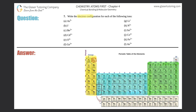Number seven: write the electron configuration for each of the following ions, a through l. This one is going to be crazy. Instead of watching a long video, they don't tell me to write the full electron configuration, so I'm going to be doing the shorthand. You guys should know how to do electron configurations — it was about one third of chapter three. If you're stuck, go back to chapter three and find those questions.